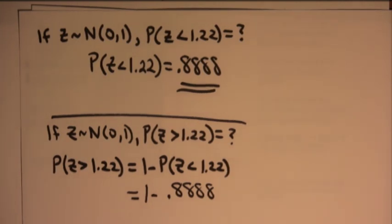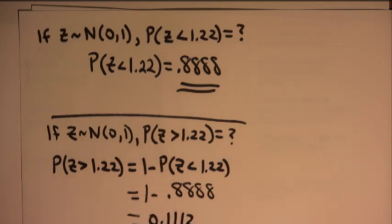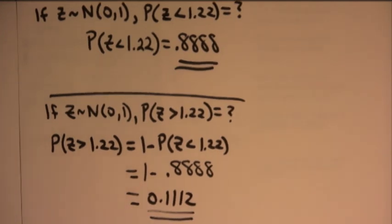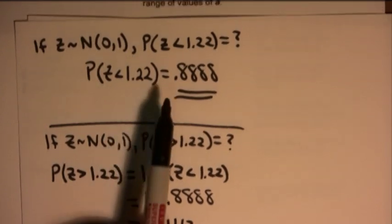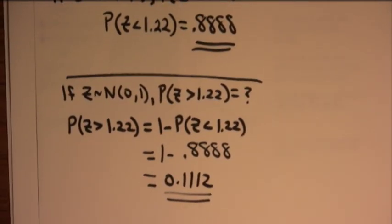And so, you're going to take your calculator if you like, and you calculate 1 minus 0.8888. And you get 0.1112. So, if it's a less than problem, you can look it up in the table directly. If it's a greater than problem, you have to say 1 minus.